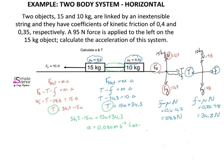Once we have the acceleration, we can substitute that value into either one of our two expressions to calculate the tension. T = 36.2 − 15 × 0.084, giving a tension in the rope of 34.94 newtons.